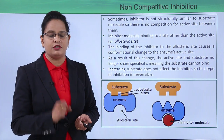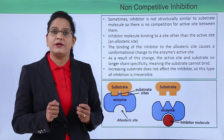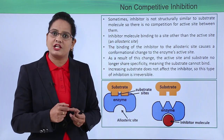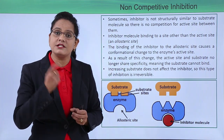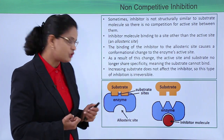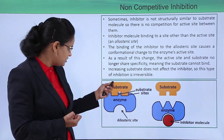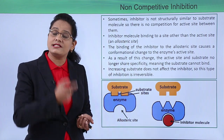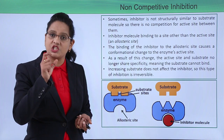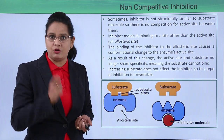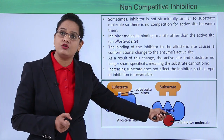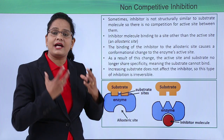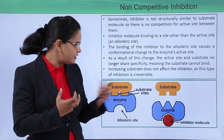In non-competitive inhibition, there is no competition for structure between the substrate and the inhibitor. The inhibitor binds to some other site on the enzyme. As you can see in the diagram, the substrate binds to the enzyme while the inhibitor comes and binds to a separate site. This separate site on the enzyme where the inhibitor binds is known as the allosteric site. When the inhibitor binds to the allosteric site, there is a change in conformation of the active site.